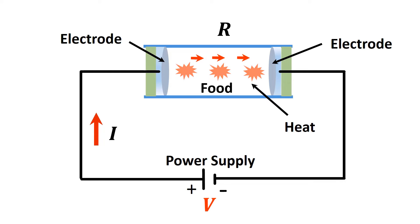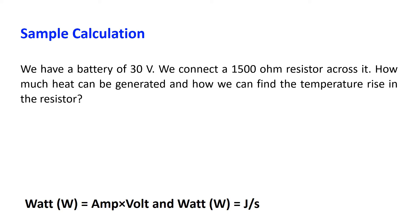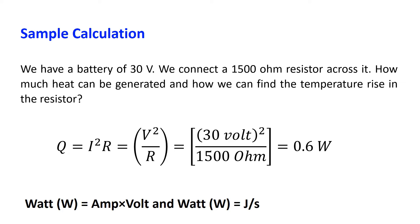We can calculate how much heat could be generated within the food with a simple example. We have a battery of 30 volts connected to a 1500 ohm resistor. The heat generation equation is Q equal to I squared times R, which equals V squared by R. Q is the heat flow in watts, where 1 watt equals amps times volts, and 1 watt equals joules per second. The calculation gives 0.6 watts of heat generated in the resistor, which is 0.6 joules per second.